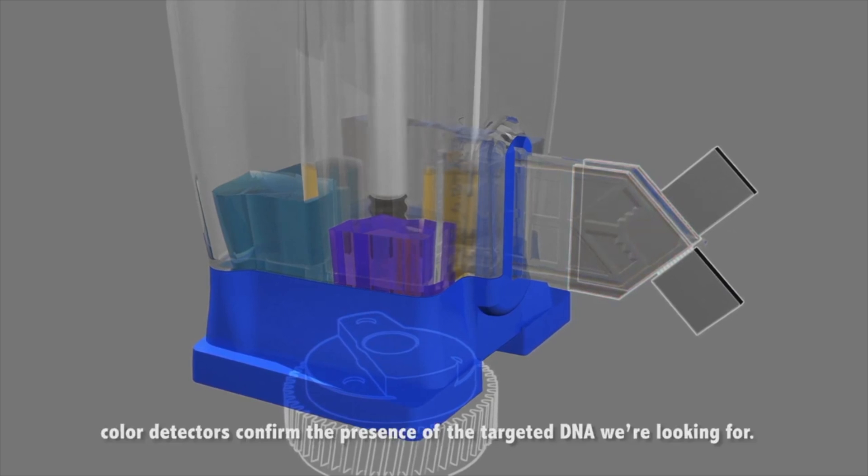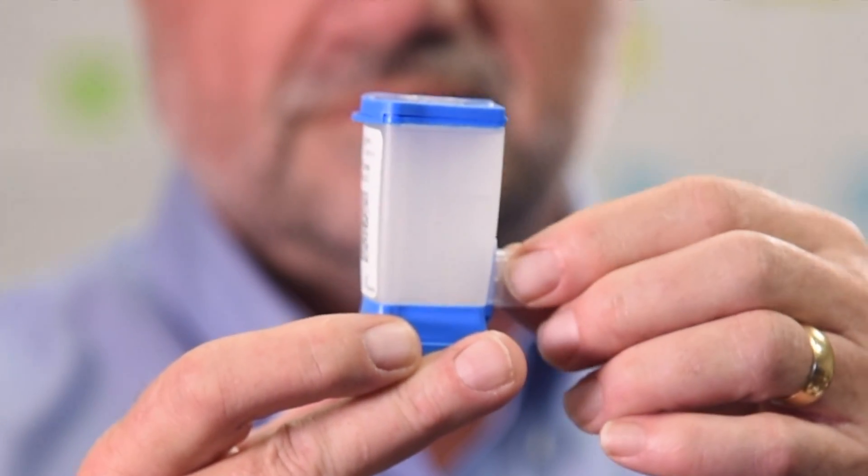The detection occurs in this thin tube on the side. That's where the heating and cooling steps of PCR are carried out, and this is carried out pretty quickly.